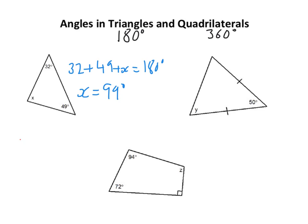So you should have 72 plus 94 plus the little square, 90, plus Z. It's got to make 360. You do that in your calculator or however you're asked to do it, and you should get 104.